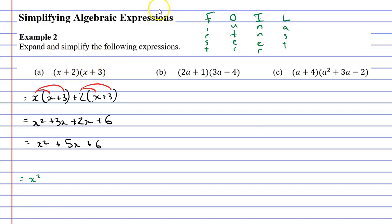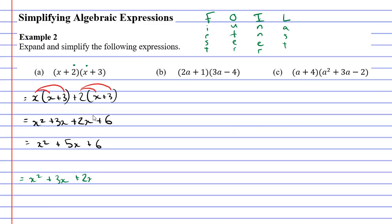Next in FOIL is Outer, which means the outer terms — the x and the 3, both on the outside of the expression. x times 3 gives us 3x. After that is Inner, meaning the inner terms, which are the 2 and the x in the middle of the expression. 2 times x is 2x, so we write plus 2x.